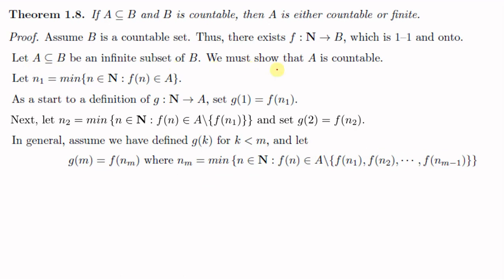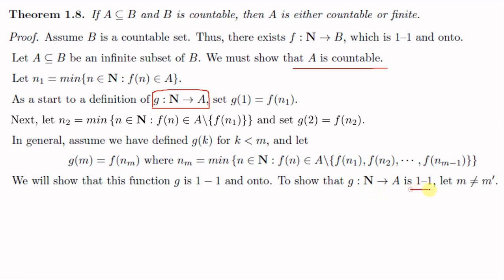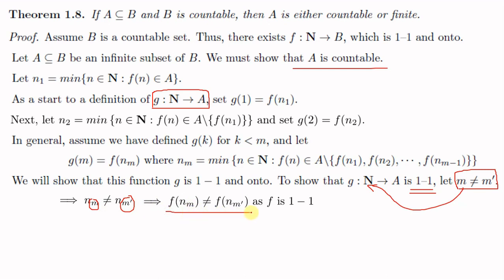Now we have to show that the set A is countable. We have defined a function g from N to A, and to show that A is countable we have to show that this g is one-to-one and onto. First we shall show that g is one-to-one. Let m not equal to m', where m and m' are elements of N. Now m not equal to m' means nm not equal to nm', because by the definition of n1, n2, n3, etc., we know that n1, n2, n3 are all distinct. So nm not equal to nm' implies that f(nm) not equal to f(nm'), because the function f is one-to-one.